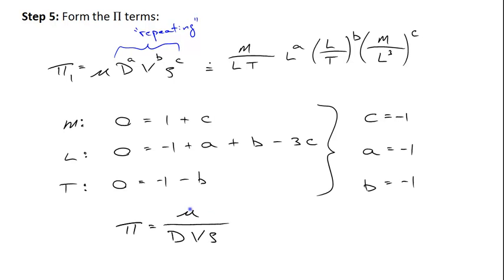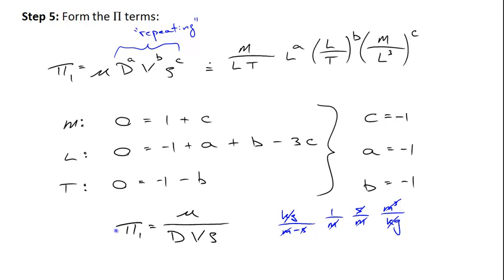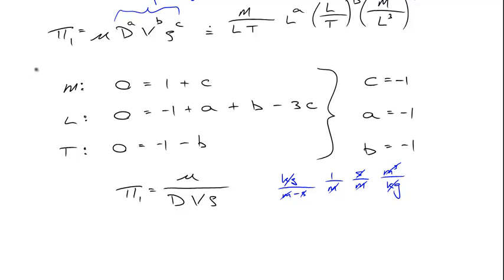Let's verify this is dimensionless. Pi one has kilograms per meter·second for viscosity, one over meters for diameter in the denominator, seconds per meter for the inverse of velocity, and meters cubed per kilogram for the inverse density. The kilograms cancel, seconds cancel, and we get meters cubed in both numerator and denominator — so indeed pi one is dimensionless. Because it's dimensionless, we can take pi one prime to be one over pi one, which equals ρvd/μ — and this is known as the Reynolds number.